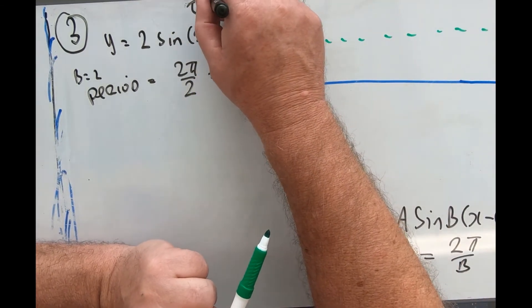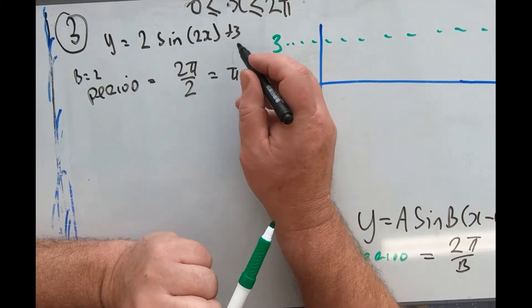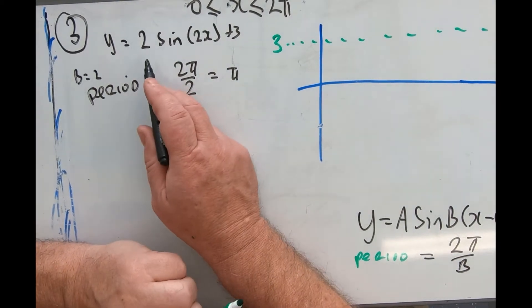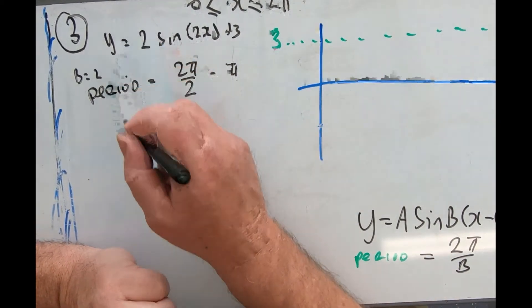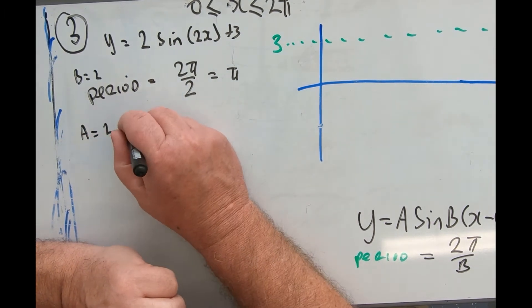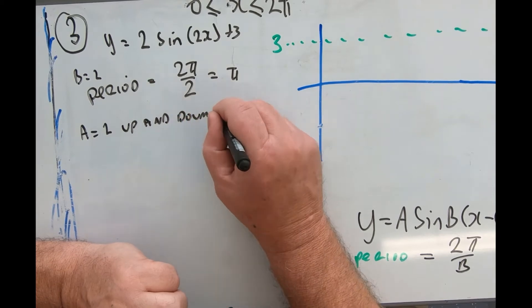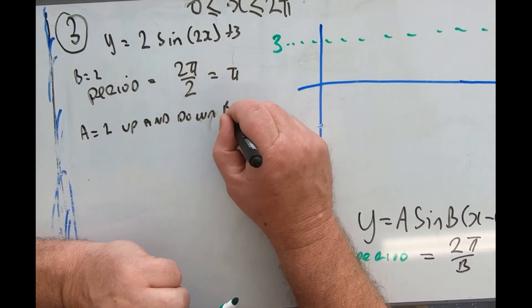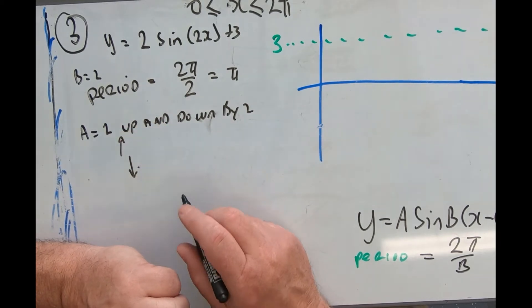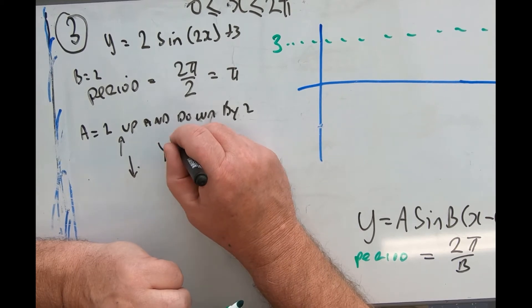Now we were asked in this question - in order to get this mark, the graph is going to repeat two times, right? So it starts here. And A is the amplitude. A equals 2, up and down by 2.